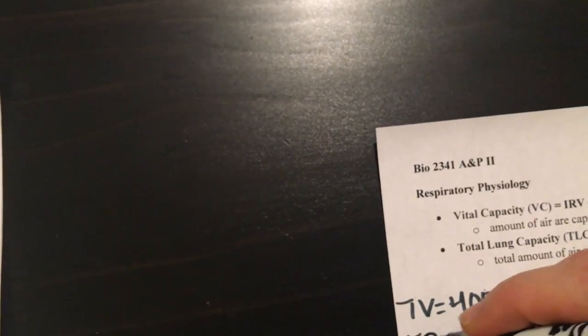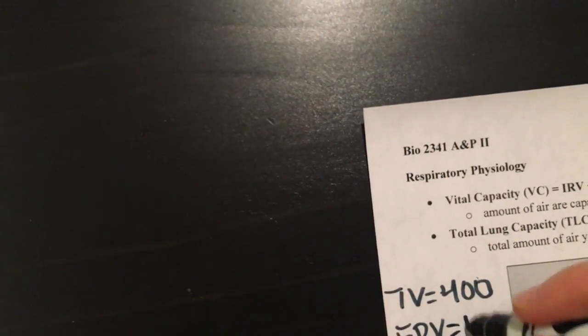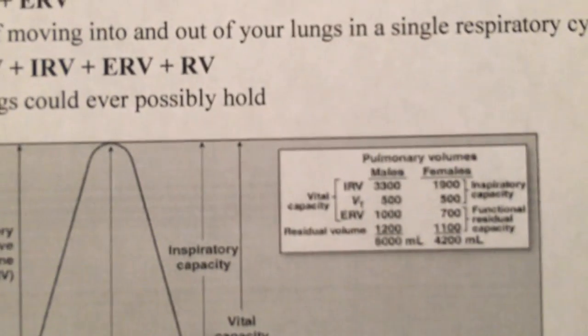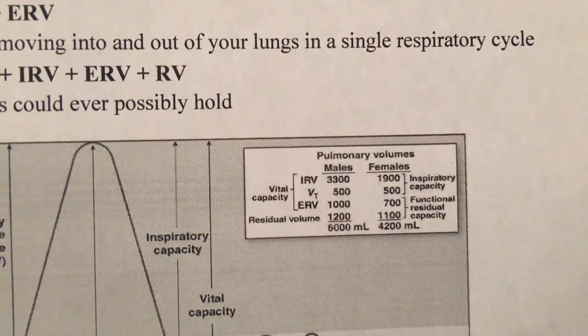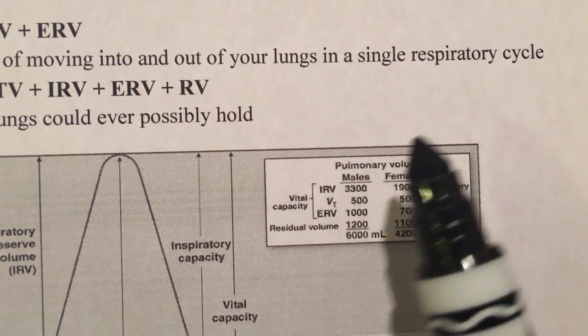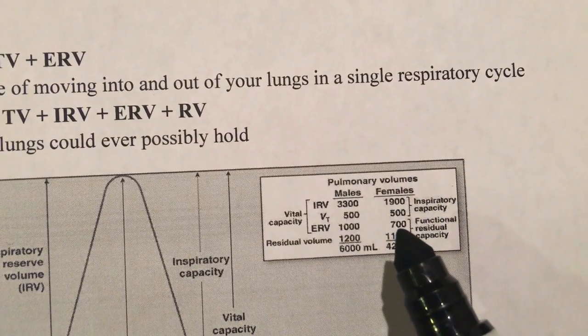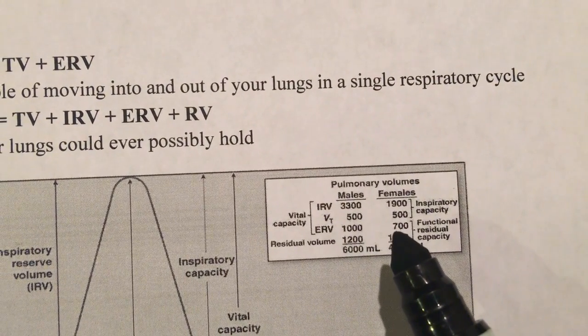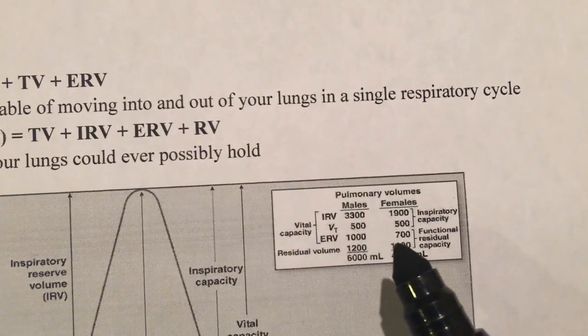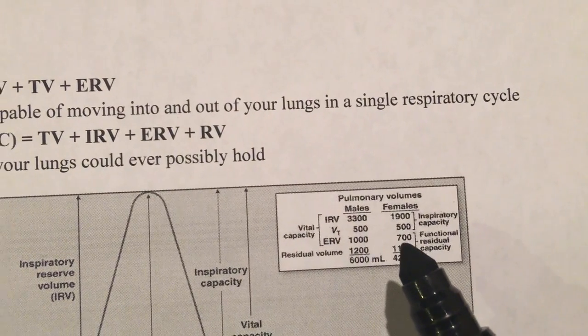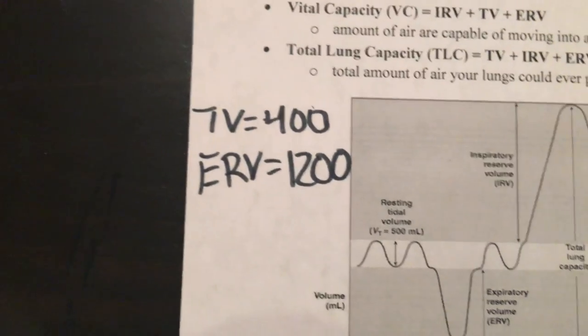Let's mark that down. Expiratory reserve volume for me was 1200. If we look over here, we can see that I'm actually a little better than average. Females typically expiratory reserve volume is around 700. It's possible that I didn't do a full normal exhale, so that's just something that you have to take into account when you're doing these experiments.